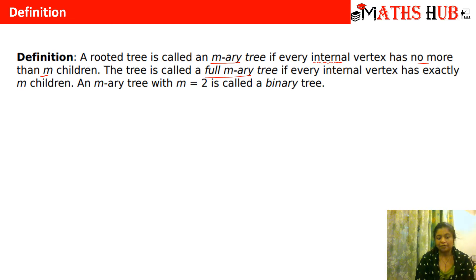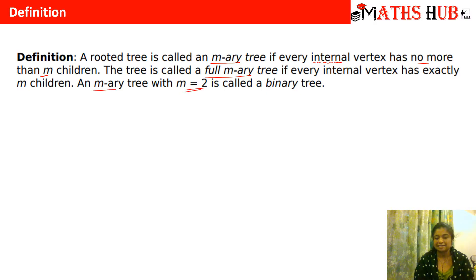An m-ary tree with M equal to 2 means if a tree has at most 2 children, then that tree is called a binary tree.